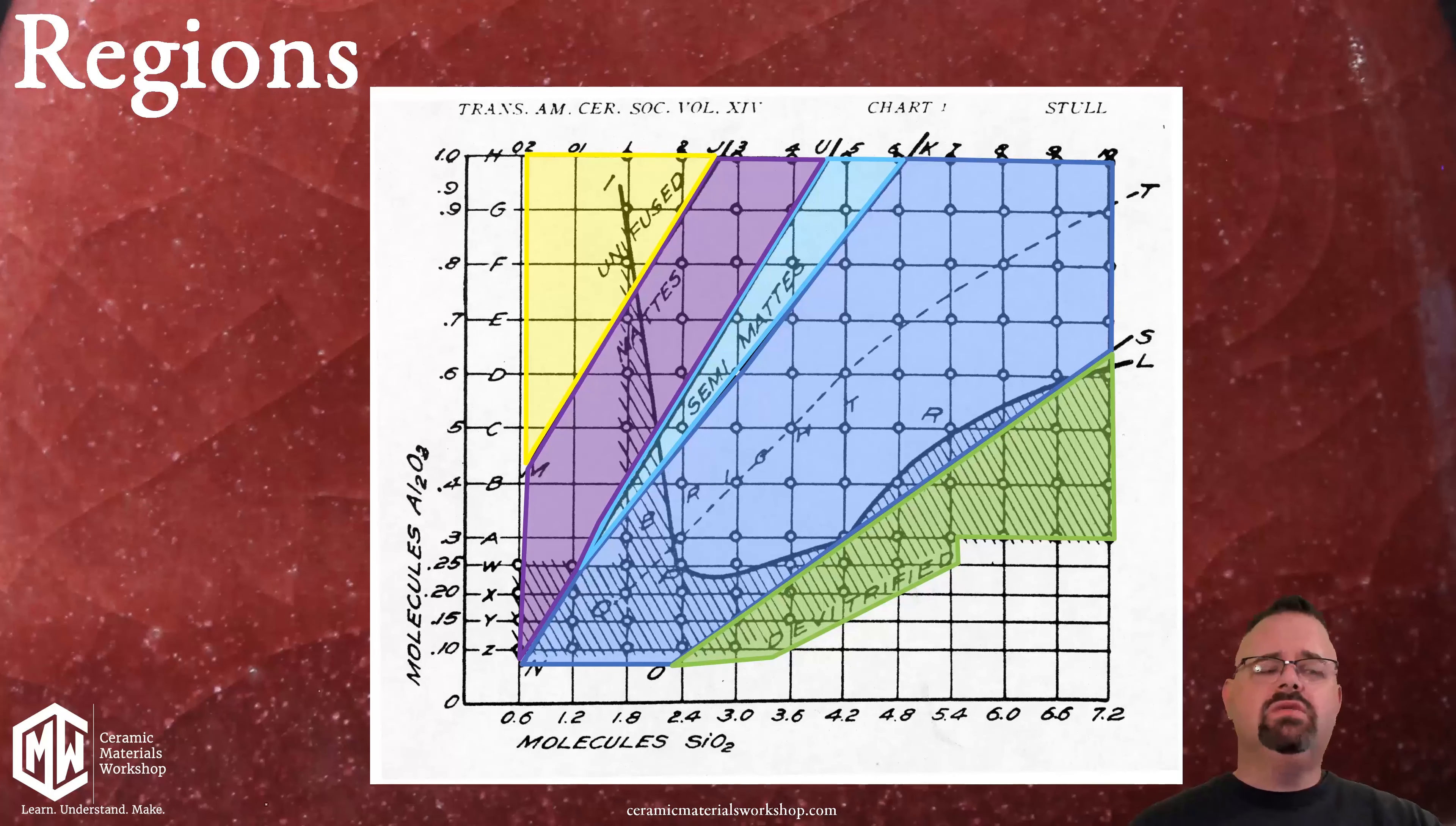Now we do have two more sections. One says unfused and one says de-vitrified. This terminology was not 100% accurate. Both of these areas are actually just under fired. The one on the left side is under fired because it has too much alumina and the one on the right is under fired because it has too much silica but they're both under fired and we'll look at how we know that in a little bit.